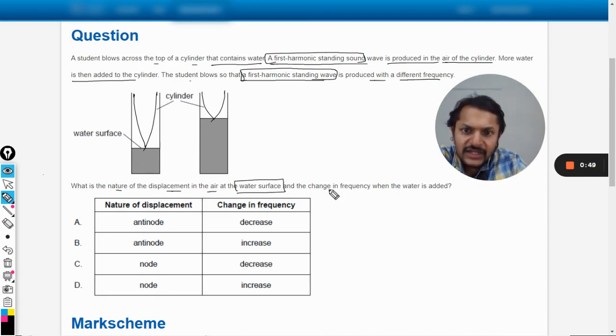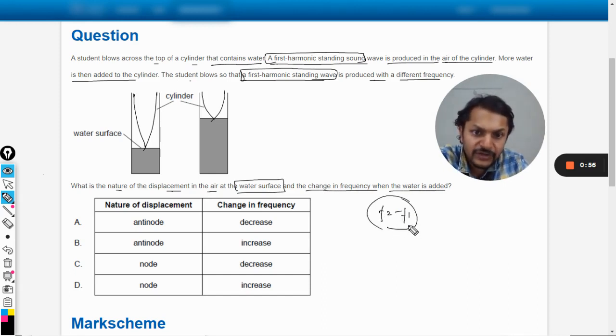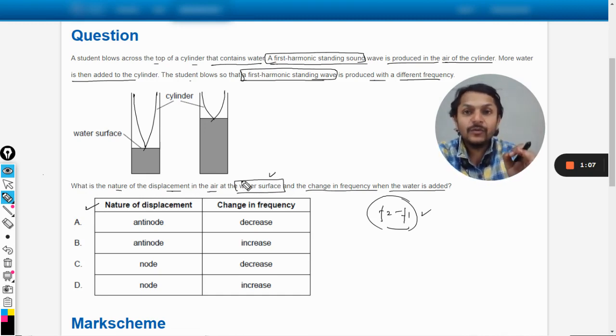Now, what is the nature of the displacement in the air at the water surface and the change in frequency when the water is added? So first of all, we want to find f2 minus f1. For this, we have to go deeper and we will see it.